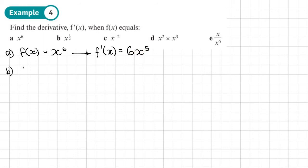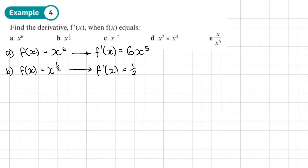Part b: f of x equals x to the power one half. To find f dash of x, we multiply by the power. Since it's like 1 times x, we get one half times 1, giving one half x. Then subtract 1 from the power: one half minus 1 is negative one half. So f dash of x equals one half x to the power negative one half.